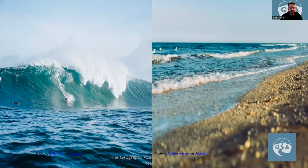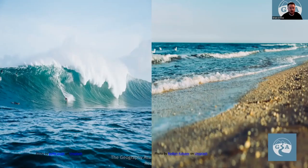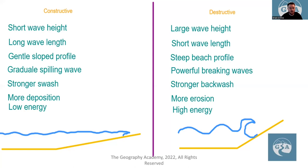There are two different types of waves. The smaller, gentler one is known as a constructive wave. It has a short wave height and long wave length, giving it a gently slow profile and gradual spilling waves. The stronger swash means it brings sediment onto the shore, but because of the low energy, the backwash can't carry much sediment off. So it continuously breaks and gradually deposits sediment, which is what causes deposition in this area.